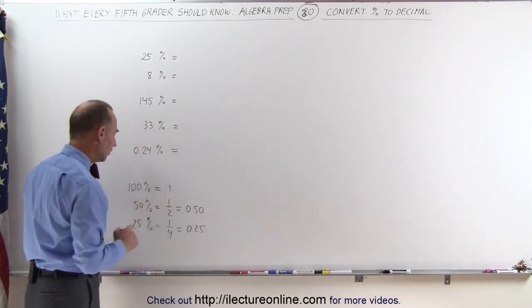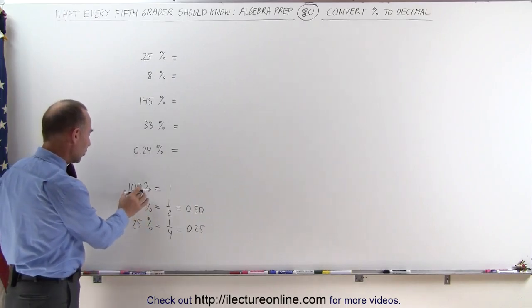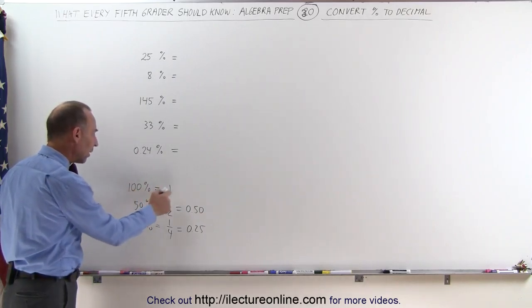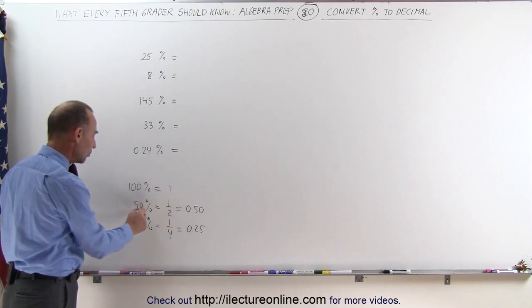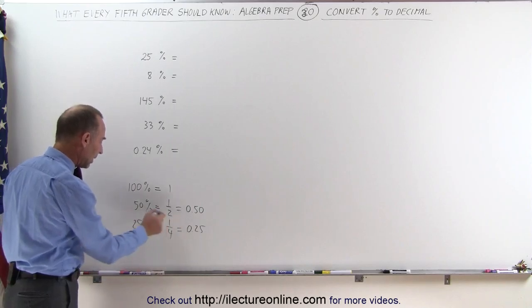when we look at this we simply see that we have to move the decimal place. We can take the number belonging to percent, move the decimal place over two spots and we get one. Here again if we move the decimal place over two spots we get this. If we move the decimal place over two spots we get that.